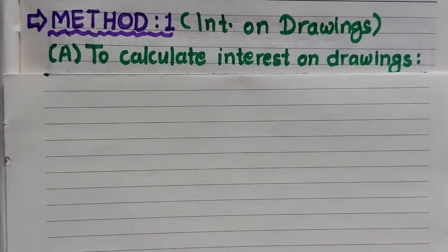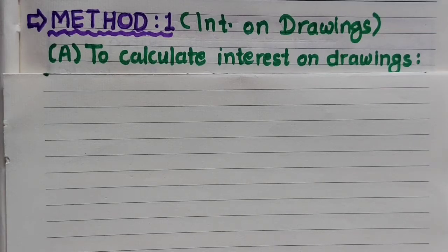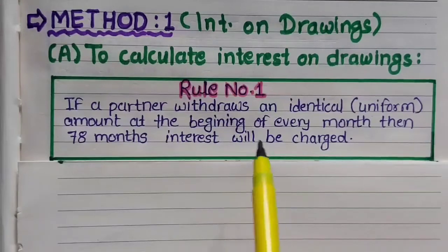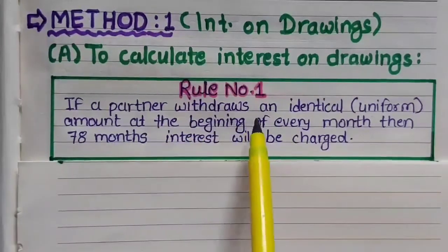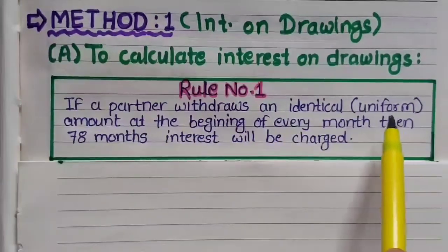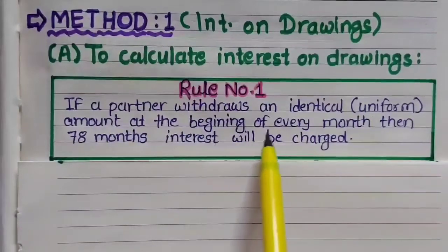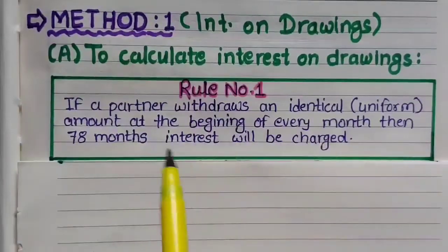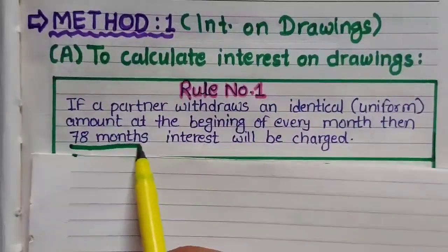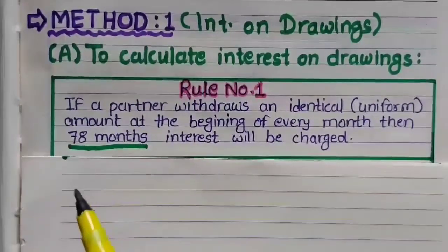Friends, you might be thinking that calculating Interest on Drawings is nothing new — we have calculated Interest on Drawings many times while doing Final Accounts in Class 11. But the point here is slightly different; you will not have seen this before. So the first rule: if a partner withdraws an identical or uniform amount at the beginning of every month, then 78 months' interest will be charged.